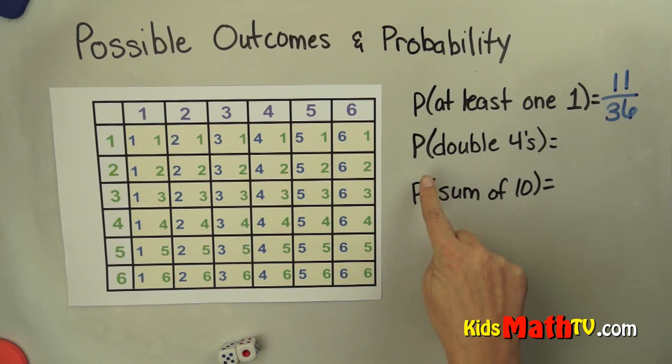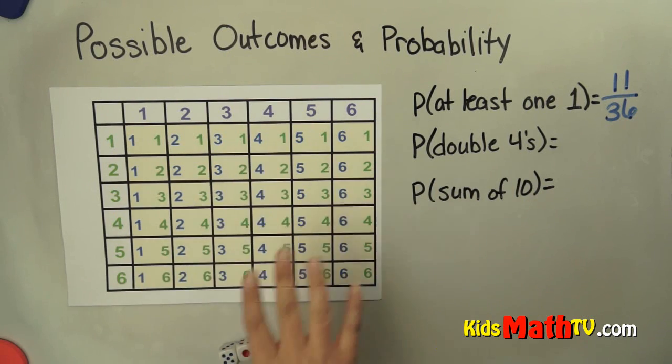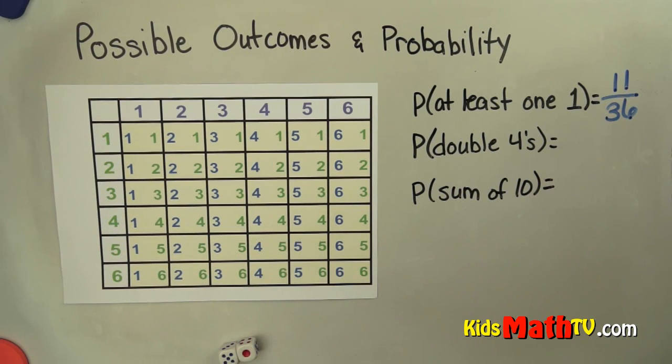Let's try another one. What's the probability of rolling double 4's? So I look at all my outcomes and I figure out how many times can I get double 4's? Well, there's only one opportunity for me to get double 4's.